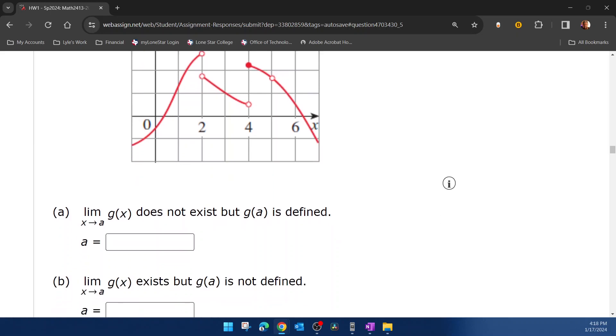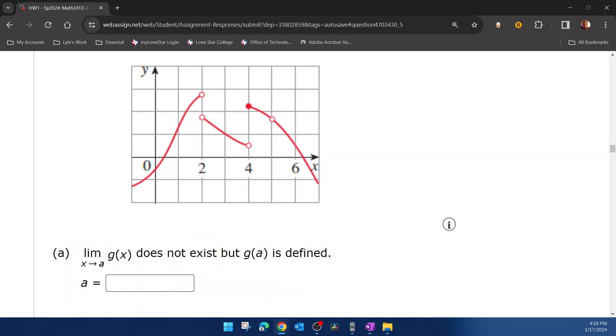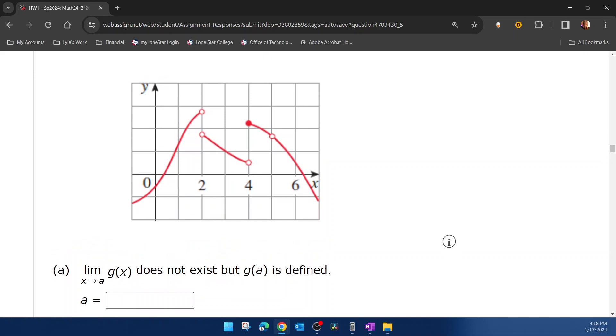So for part a, they want us to find a number a such that the limit of the function as x approaches a does not exist, but the function value is defined. So where the limit does not exist would be where you do not approach the same height from both sides, but in order for the function to be defined, there has to be either a solid dot or the function has to exist.